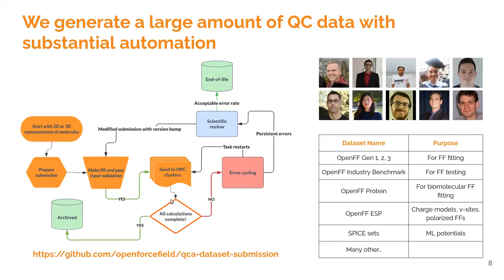This is our workflow of QC data set generation, where anyone can come with a set of 2D or 3D representations of molecules and make a pull request on the repository. This will then process the submission and send calculations to HPC clusters at different universities, sending back calculated data to QCArchive — a public repository of data hosted by MolSSI. Over the last few years we've made many submissions, resulting in a rich variety of data sets. A huge thanks to David Dotson and Brent Pritchard who handle most of the DevOps involved.